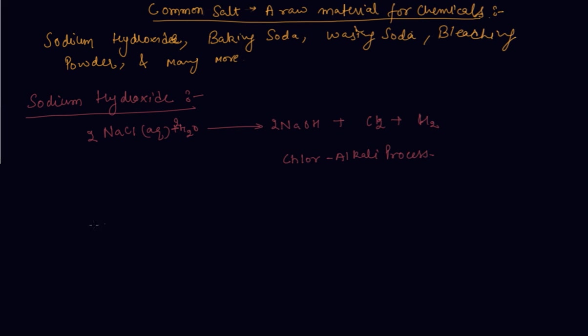So now let us discuss about bleaching powder. You have already come to know that chlorine is produced during the electrolysis of aqueous solution of sodium chloride. This chlorine gas is used for the manufacturing of bleaching powder.